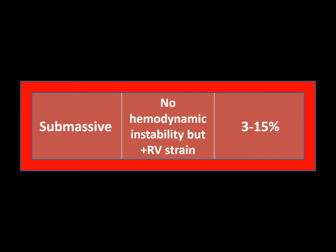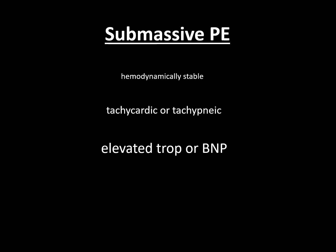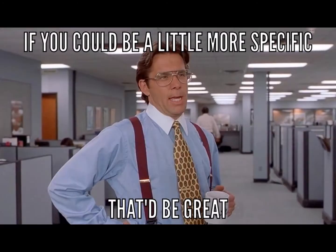Submassives may have some clinical clues, but many of these are nonspecific and may take hours to result. Submassive PEs are hemodynamically stable. They may have tachycardia and tachypnea. Once we have the luxury of lab results, we might see a nonspecific elevated troponin or BNP. But the heart of a submassive PE is the hidden right heart strain, which can reveal itself as EKG changes and elevated biomarkers — but these are not exactly specific findings.